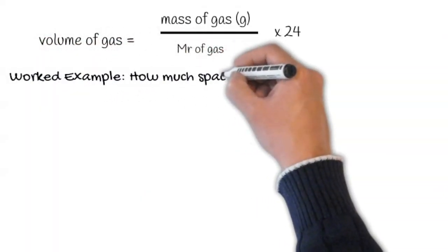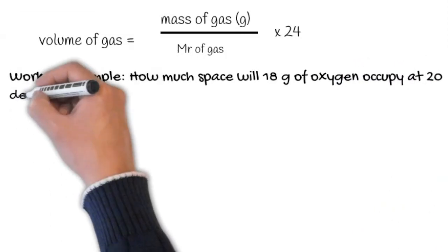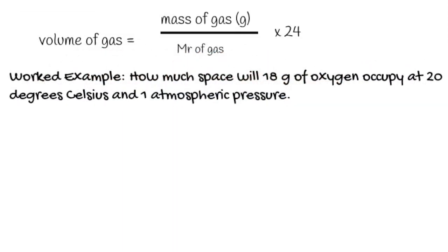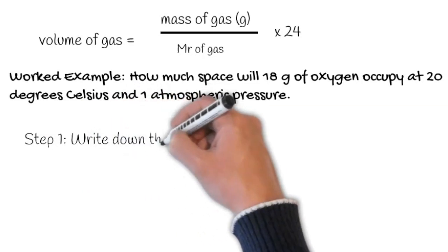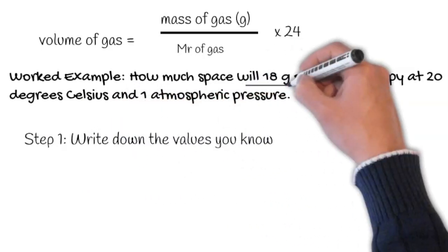This goes through a worked example. How much space will 18 grams of oxygen occupy at 20 degrees Celsius and one atmospheric pressure? In step one, we need to write down the values that we know.